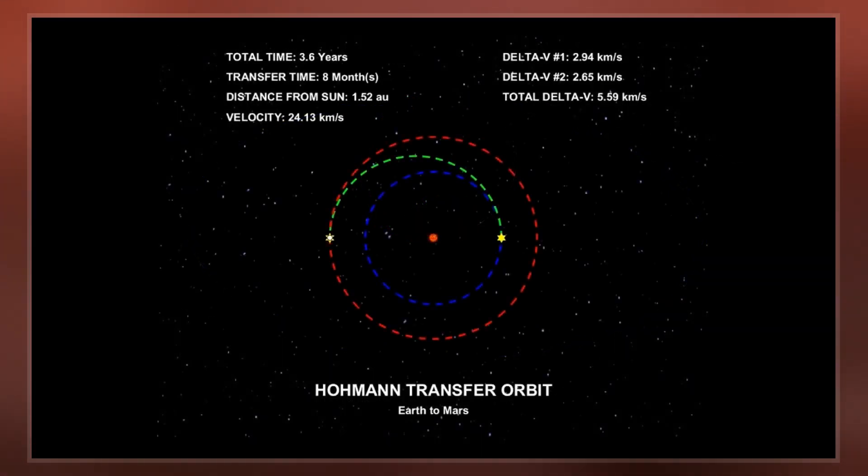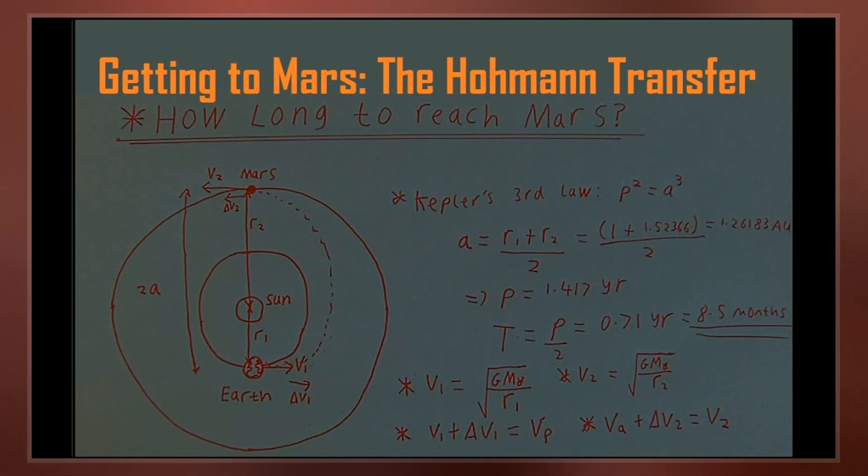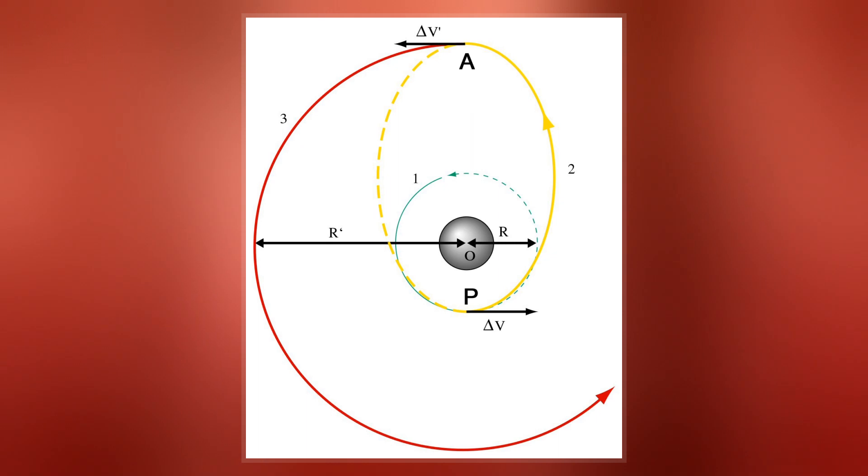Walter Hohmann, the German scientist who published a description of it in his 1925 book Die Erreichbarkeit der Himmelskörper, was influenced in part by the German science fiction author Kurd Laßwitz and his 1897 book Two Planets.